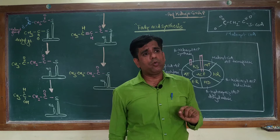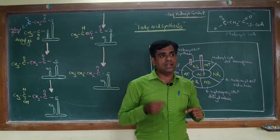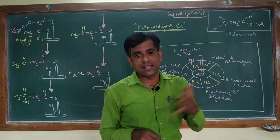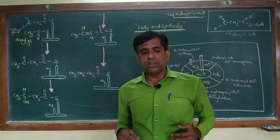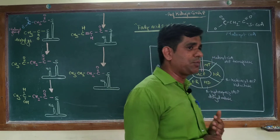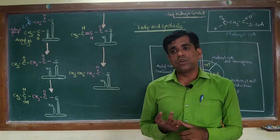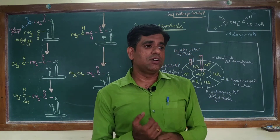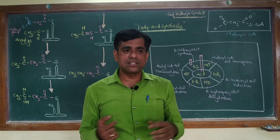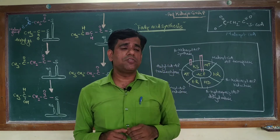A second important difference: the reducing equivalents. During degradation, in one step it was FAD which acted as the electron acceptor, and in the second step of beta oxidation it was NAD which acted as the reducing equivalent acceptor. But in synthesis it was found that NADPH acts as the donor of reducing power during the synthesis. This also suggested that yes, it is not the reversal of beta oxidation.